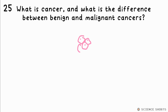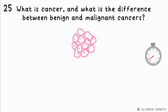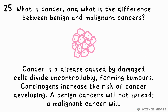Question 25. What is cancer, and what is the difference between benign and malignant cancers? Cancer is a disease where cells mutate and start dividing uncontrollably, resulting in tumours. Anything that increases the risk of cancer developing is called a carcinogen. Benign cancer does not spread through the body, but a malignant cancer will.